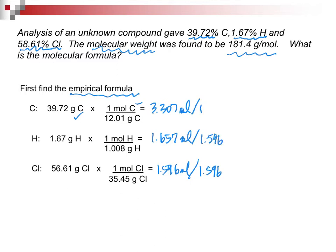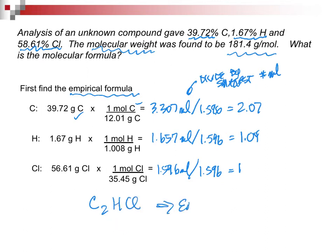Just what we did in the last problem. So what we are doing here is divide by the smallest number of moles. And it's a procedure. It's a method. We will come up with 2.07 for carbon, 1.04 for hydrogen, and 1 for chlorine. So we'll do the same thing we did in the other problems. We'll say C2HCl. That is the empirical formula.